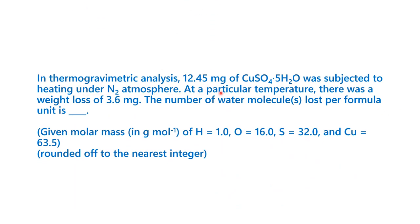In thermogravimetric analysis, 12.45 milligrams of copper sulfate 5H2O was subjected to heating under nitrogen atmosphere. At a particular temperature, there was a weight loss of 3.6 milligrams. The number of water molecules lost per formula unit is what we need to find. We are given a known weight of copper sulfate 5H2O, and on heating, we see a loss of 3.6 milligrams.